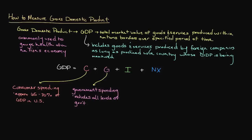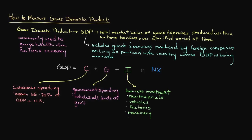The next contributing factor towards gross domestic product is I, which represents business spending on goods and services. These expenditures commonly take the form of raw materials, vehicles, factories, machinery, computers, as well as office fixtures and furniture. Although it only represents approximately 15% of GDP, U.S. business investment is still important due to its contribution towards productivity as well as job creation.